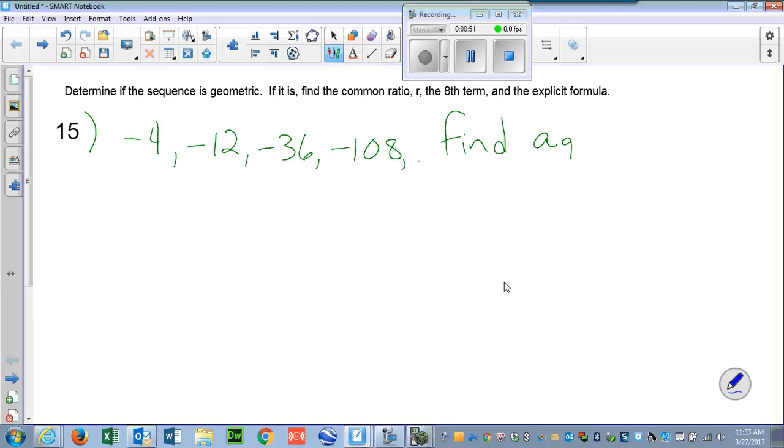So we have our first part of our problem done. We know r is 3. If r is 3, then we can also say that, yes, we have a geometric sequence. Okay, so now the next thing we have to do is find the eighth term. So recall the formula, a sub n, and the more times you write this down, you will remember it. I promise you. a1 times r to the n minus 1.